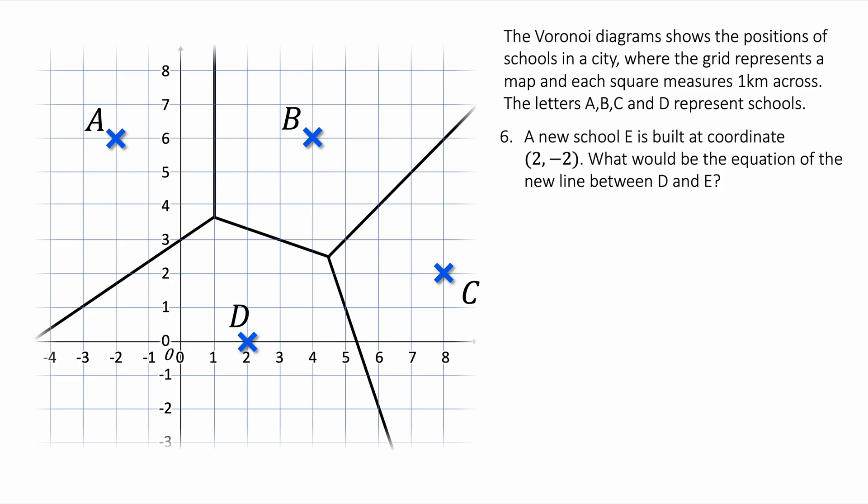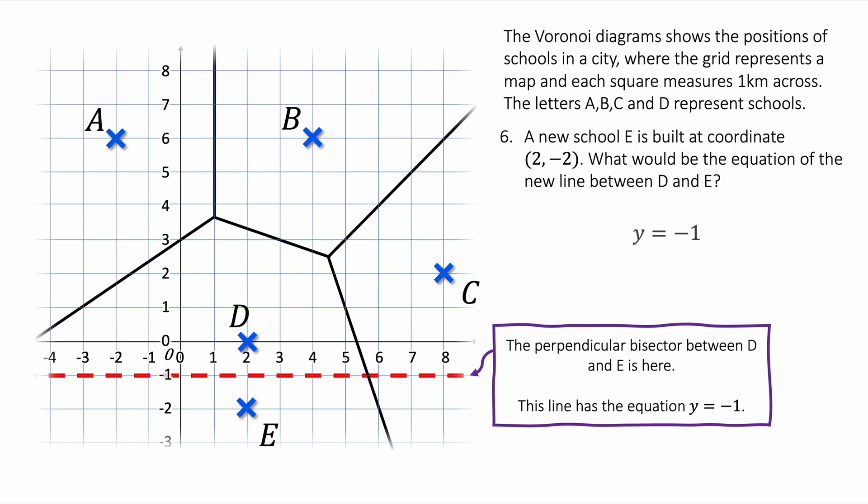Question six. A new school E is built at coordinate (2, -2). What would be the equation of the new line between D and E? Let's mark on our graph the coordinate (2, -2), which is here. I can see that the line halfway between those two will be a really simple flat horizontal line between the two of them. That will have the coordinate y equals minus one. That is the equation of the line. Y equals minus one.